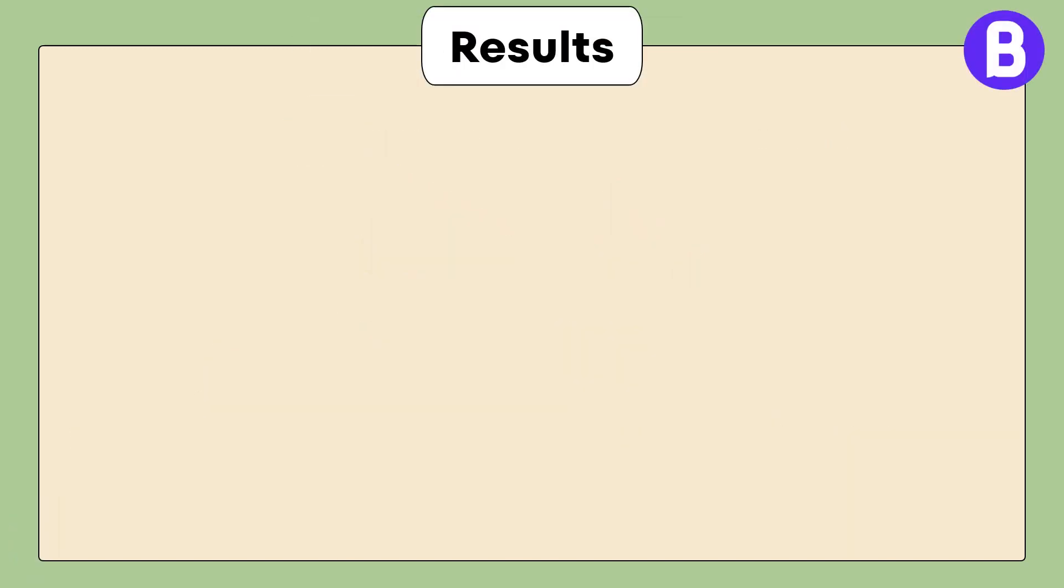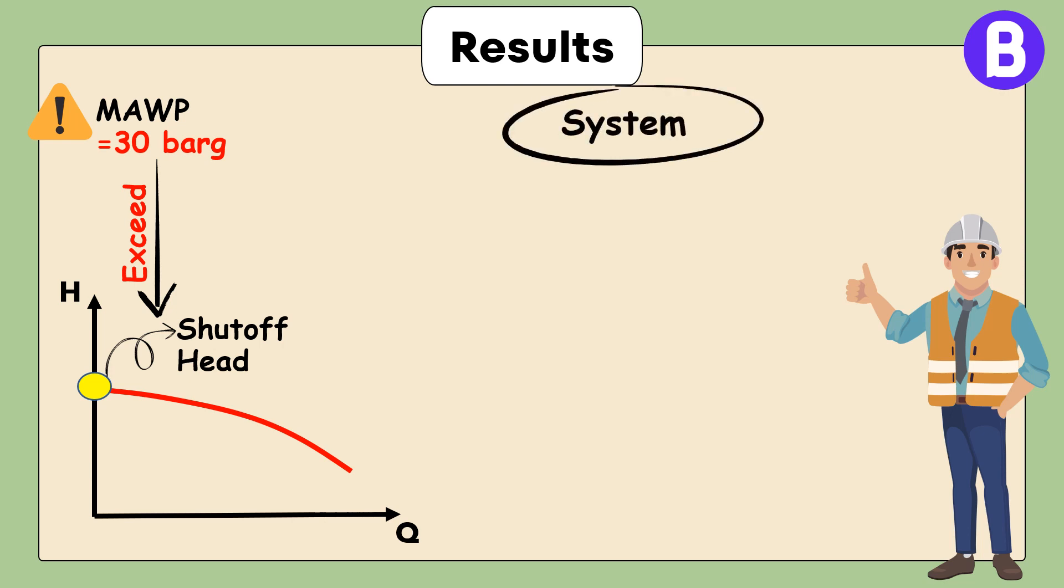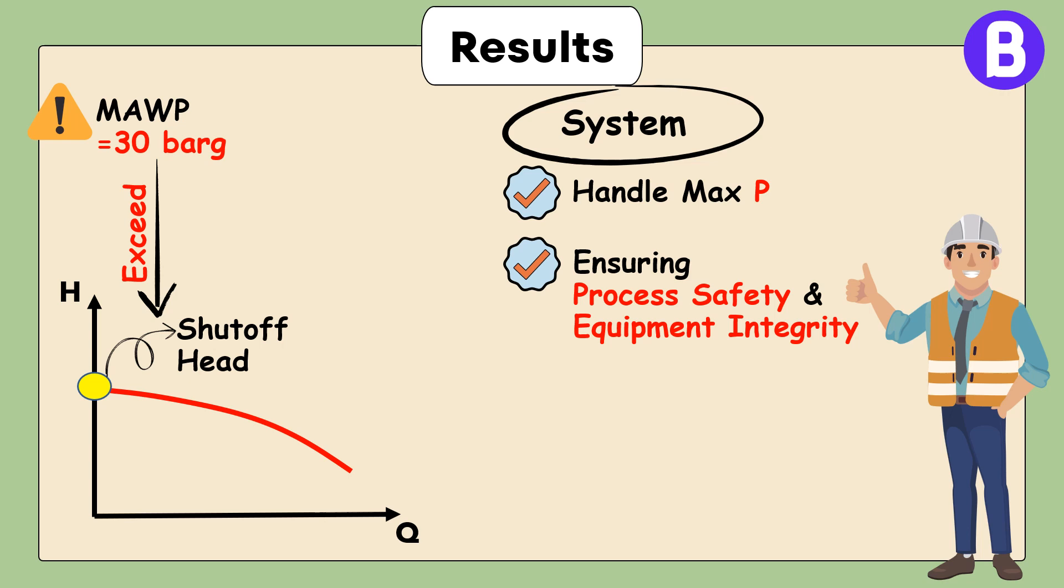Let's see the results. Once the modifications were completed, heat exchanger's maximum allowable working pressure was successfully increased to 30 bar gauge. This exceeded the pump's shut-off head pressure. The discharge system, including the exchanger, piping, and instruments, was fully rated to handle the maximum pressure, ensuring process safety and equipment integrity. The whole system is now inherently safe and can withstand maximum pressure from the pump.